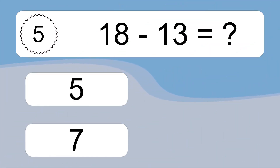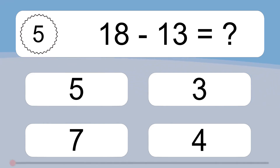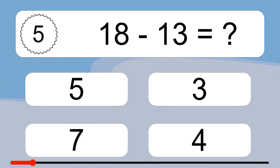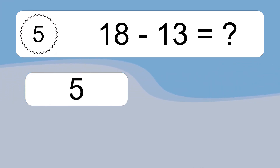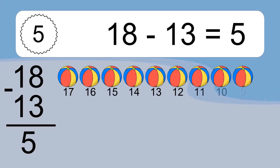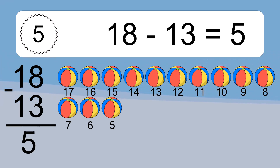18 minus 13 equals what? 18 minus 13 equals 5. Let's count it: 17, 16, 15, 14, 13, 12, 11, 10, 9, 8, 7, 6, 5.